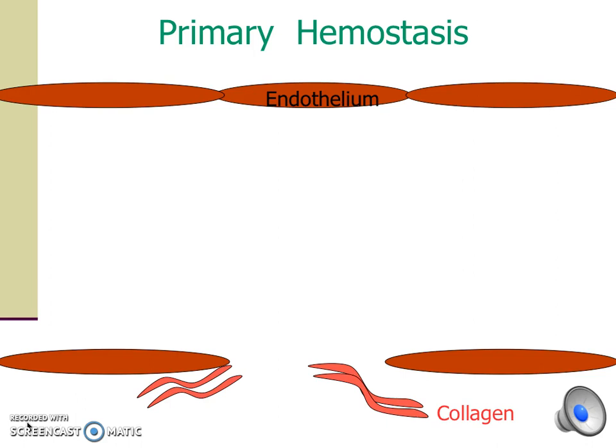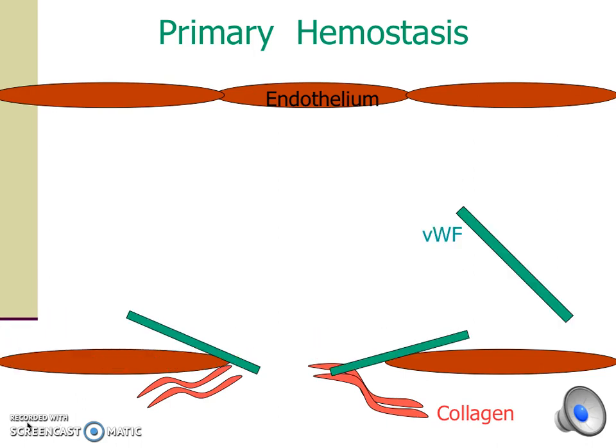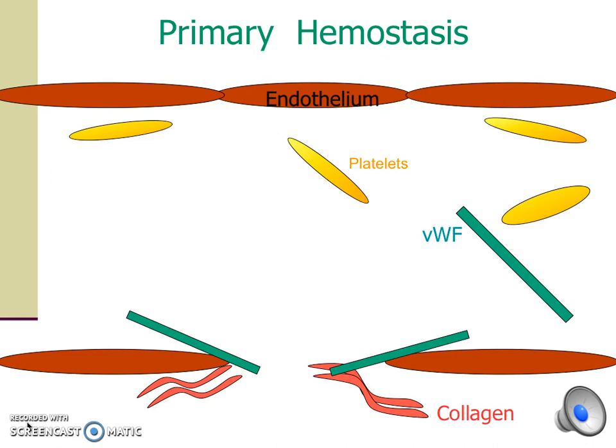As a result, the von Willebrand factor flowing by the injury site sees the collagen and changes its conformation by spreading out like glue over the collagen layer. The platelets flowing by the injury site also see the exposed collagen and von Willebrand factor, and they start adhering or sticking to the site via platelet surface glycoprotein 1b. This platelet adhesion process activates the platelets to change shape and to secrete contents from their granules.